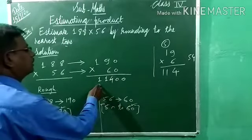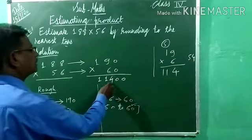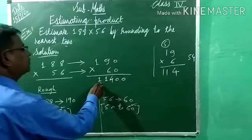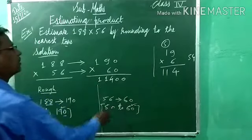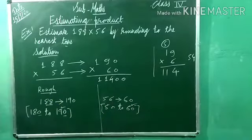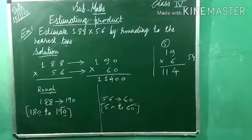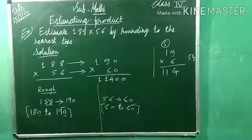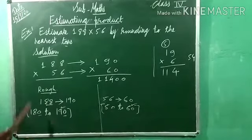So 1 stands for 10,000 and the full answer is 11,400. The estimated product is 11,400. Understood? Note down this example.